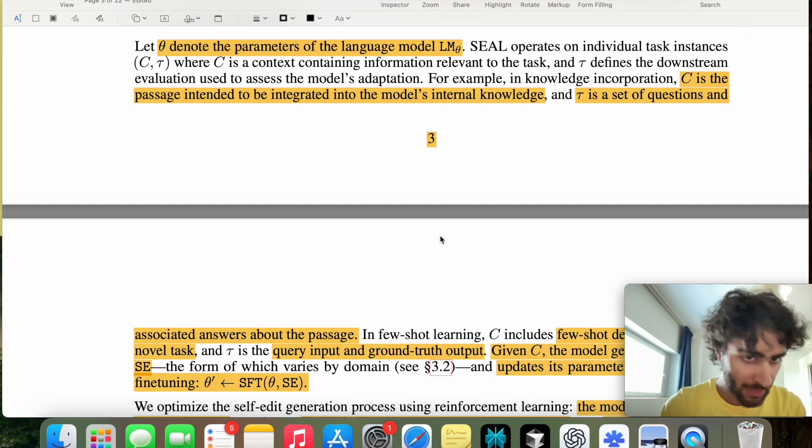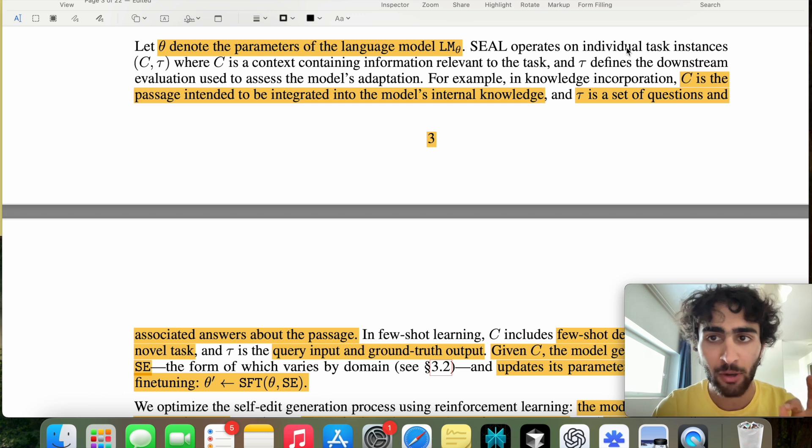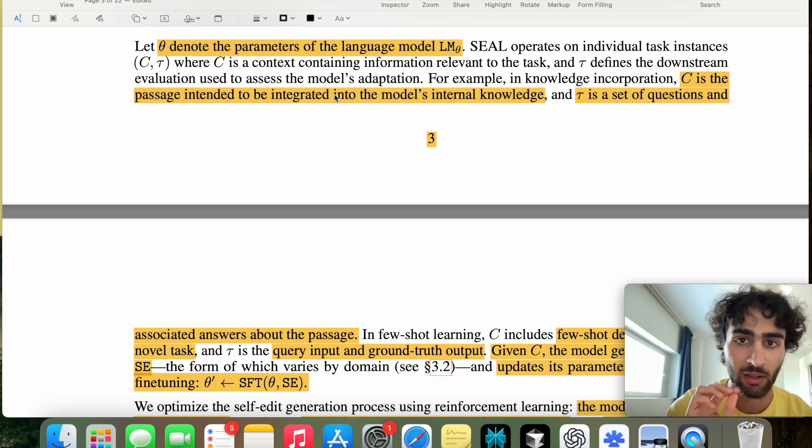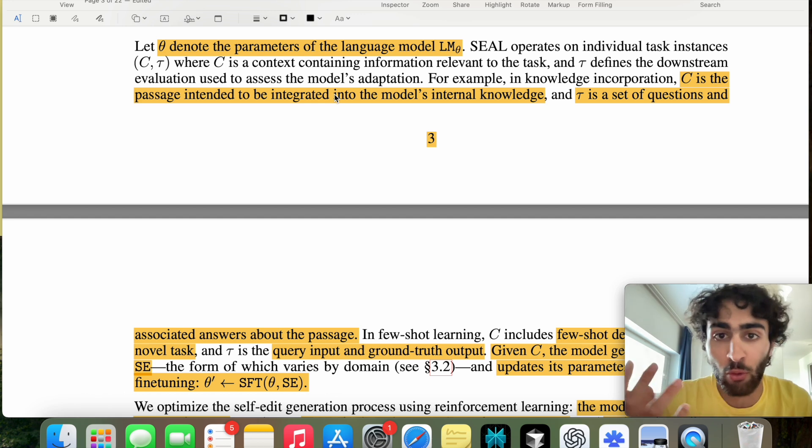So now we're getting into the meat of the paper. Let Theta denote the parameters of the large language model. SEAL operates on individual task indices, where context C is the task that we would like to achieve. So the context containing information on the task. And then tau is essentially the ground truth. It's the downstream evaluation. So evaluation meaning this is how we're going to test if the model has succeeded or not. This is essentially our reward function, in essence.